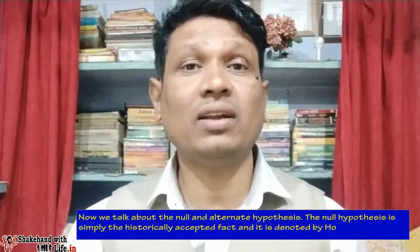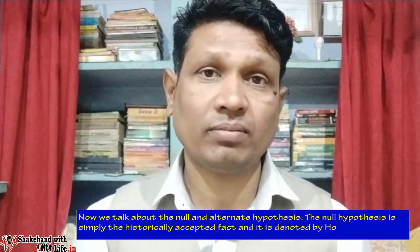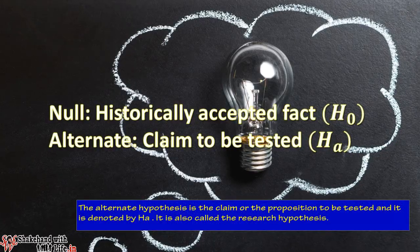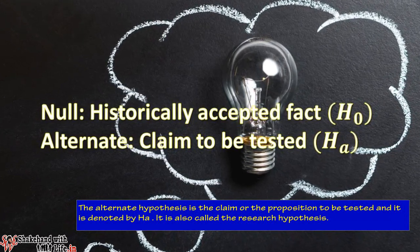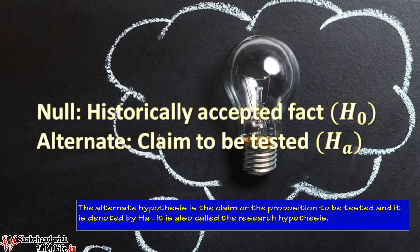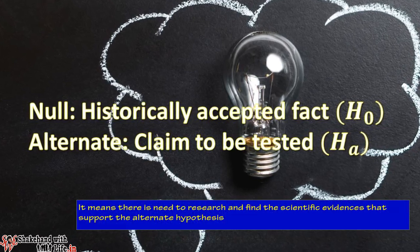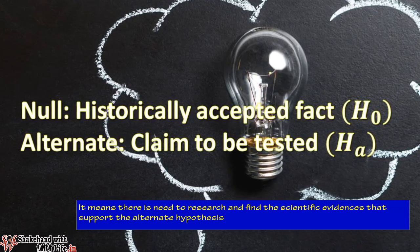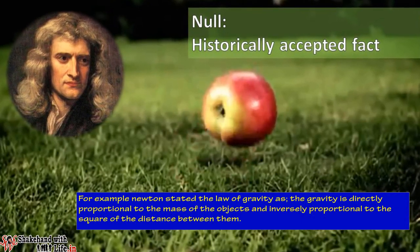The null hypothesis is the historically accepted fact, denoted by H₀ — where zero means empty or nothing. The alternate hypothesis is the claim or proposition to be tested, denoted by Hₐ, where 'a' represents alternate. It is also called the research hypothesis, meaning there is a need to research and find scientific evidence that supports the alternate hypothesis. For example, Newton stated the law of gravity — that gravity is directly proportional to the mass of objects and inversely proportional to the square of the distance between them.